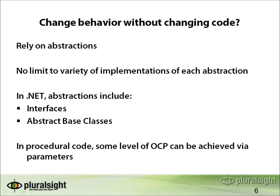So how do we change behavior without changing code? The key is to rely on abstractions. Once we start to rely on abstractions in our code, there's no limit to the number of different ways we can implement that abstraction, and thus no limit to the number of ways we can change the behavior of code using these abstractions. In .NET, abstractions include interfaces as well as abstract base classes. In procedural code, we can also achieve some level of the Open-Closed Principle using parameters.